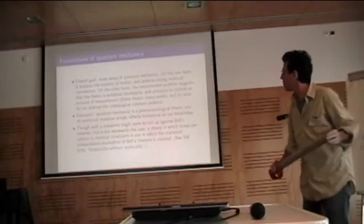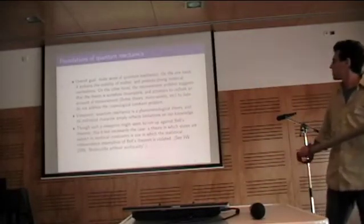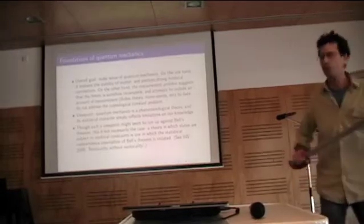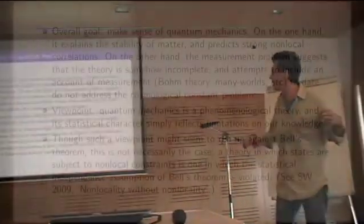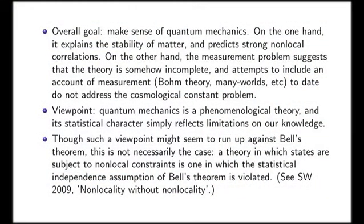My overall goal comes from somewhat of a foundations of quantum mechanics perspective. My overall goal is to make sense of the theory. On the one hand, it explains the stability of matter and predicts strong non-local correlations, both of which have been observed. We observed stable matter and we've done EPR experiments in the lab and observed the consequences of quantum entanglement.